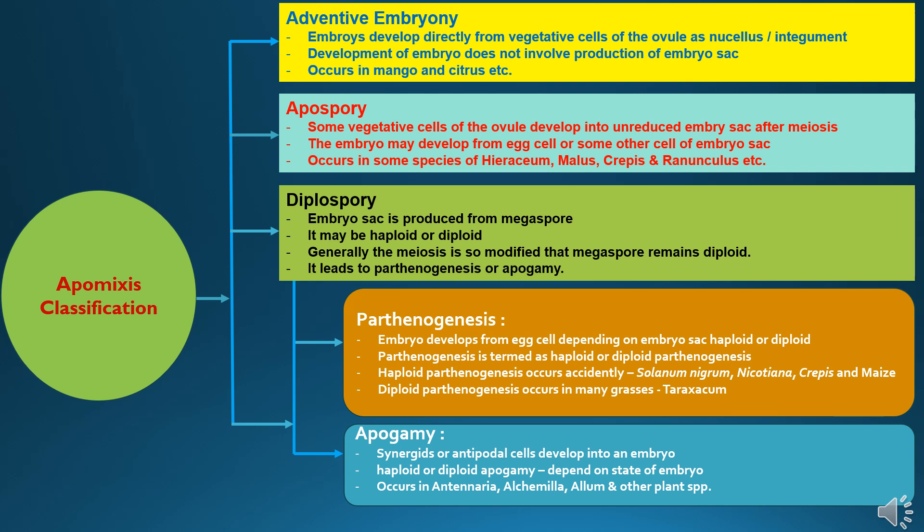The first condition is parthenogenesis, where the embryo develops from the egg cell depending on the embryo sac — it may be haploid or diploid parthenogenesis. Haploid parthenogenesis occurs accidentally in crops like Solanum nigrum, Nicotiana, Crepis, and Maize, while diploid parthenogenesis occurs in many grasses.